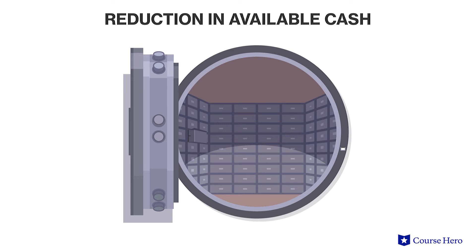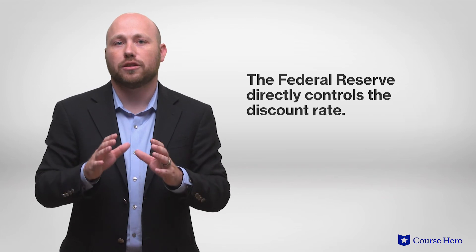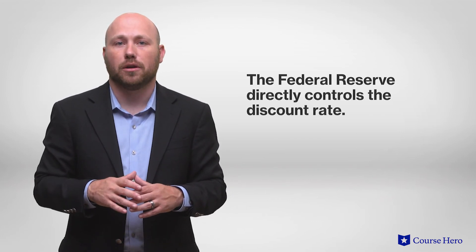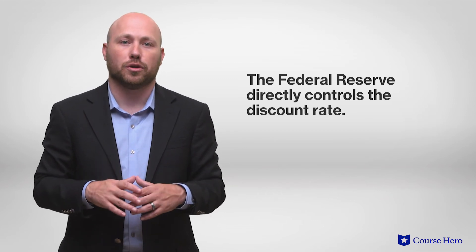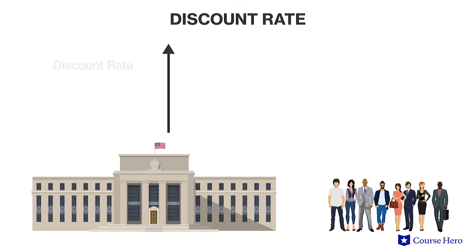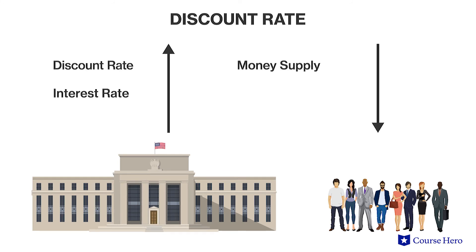The Fed can also raise the rate of interest charged at the discount window. In addition to buying and selling government securities to influence the federal funds rate, the Federal Reserve directly controls the discount rate — the interest rate on short-term loans the Fed offers institutions to help them meet temporary reserve shortages. If the Federal Reserve raises the discount rate, the money supply will fall and market interest rates will rise because banks will reduce their borrowing and potentially call in loans to increase reserves. The increased interest rate and reduction in loan service will decrease business investments and decrease aggregate demand.